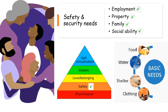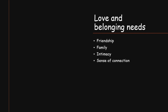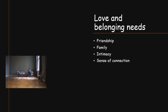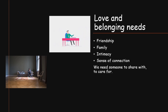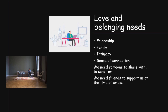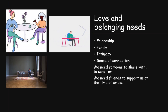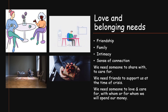Next is the third level, which consists of love and belonging needs, like friendship, family, intimacy, and sense of connection. Nobody can live in isolation with their own job and their own money. Every one of us needs a feeling of belongingness — we need someone to share with and to care for. Imagine going to your job, working quietly, and coming back home daily — we would go mad. We need friends who can support us at the time of crisis, neighbors to share our stories, and someone to love and care for, with whom we will spend our time and money together.